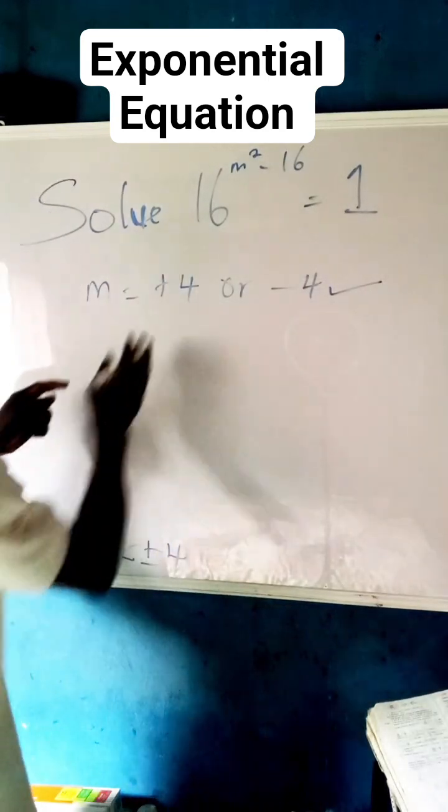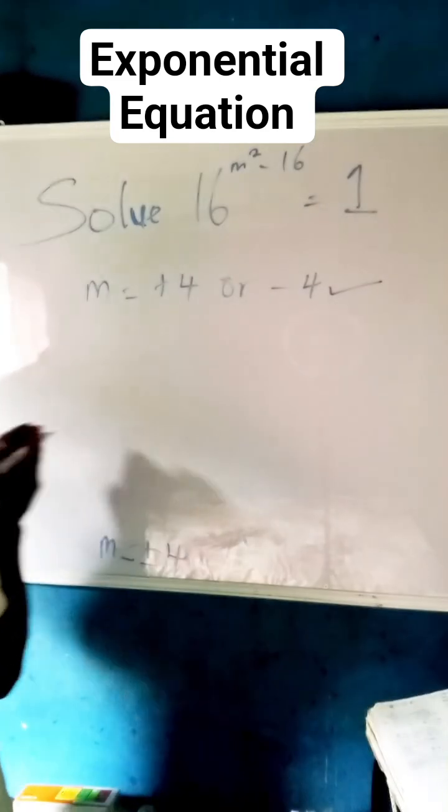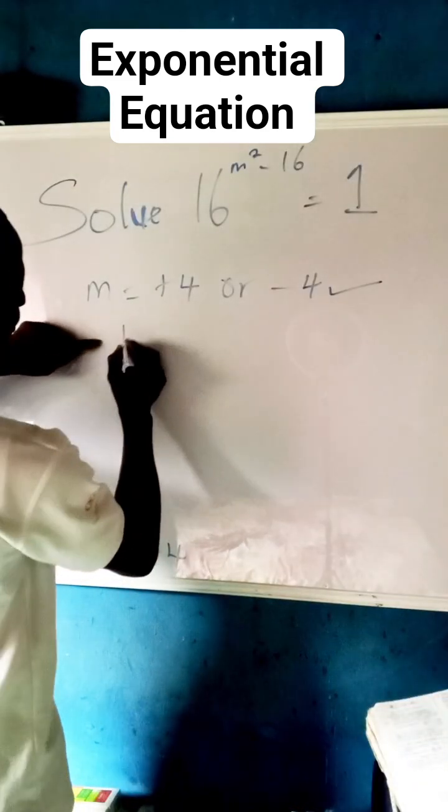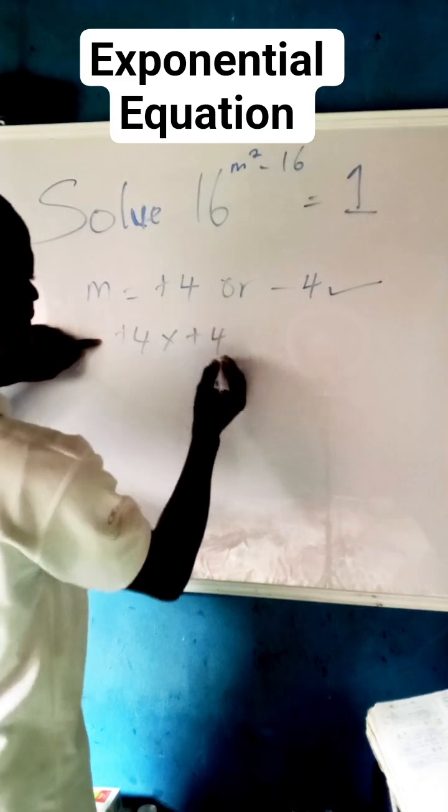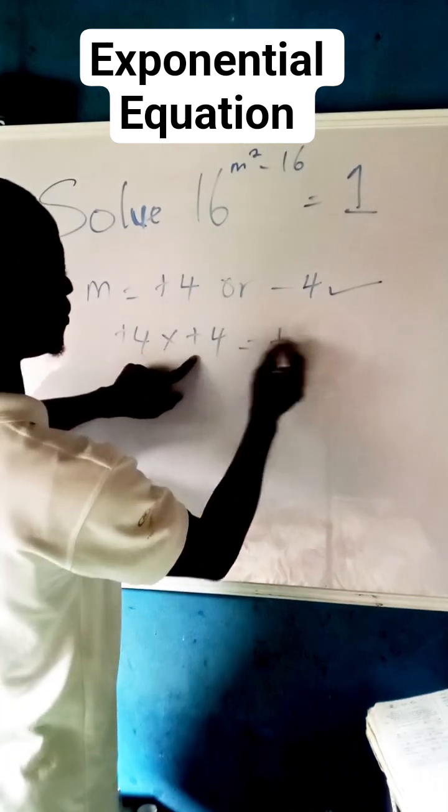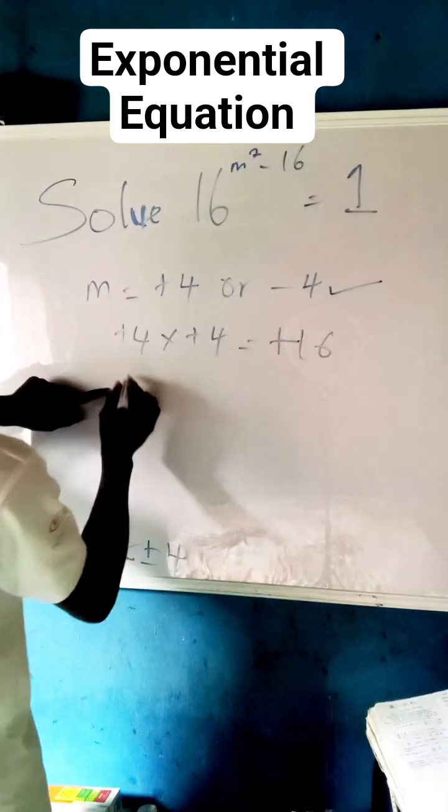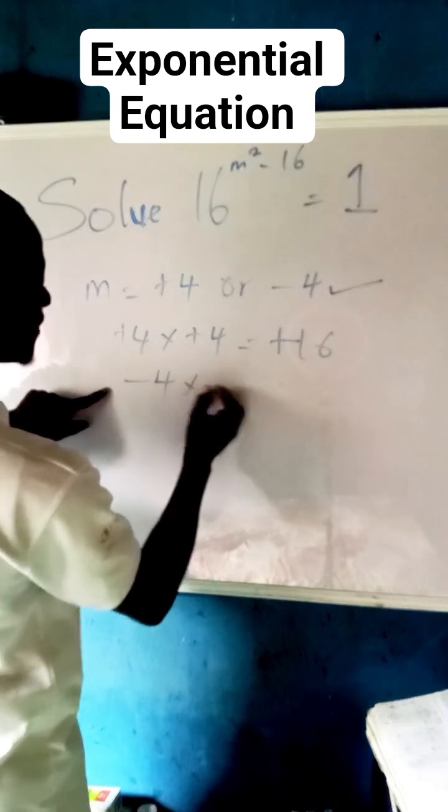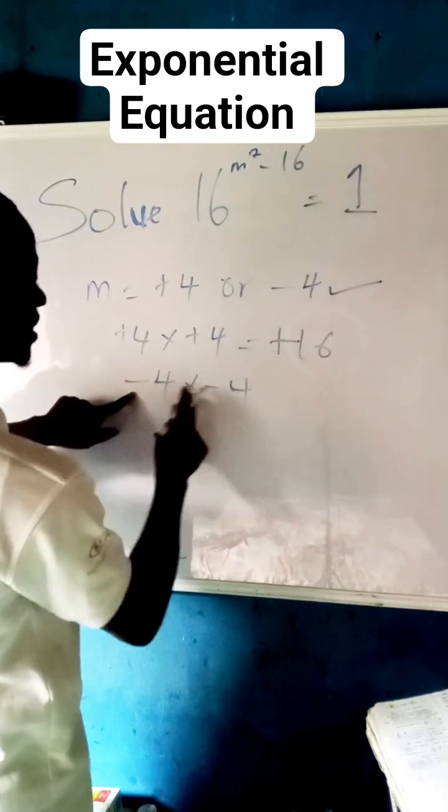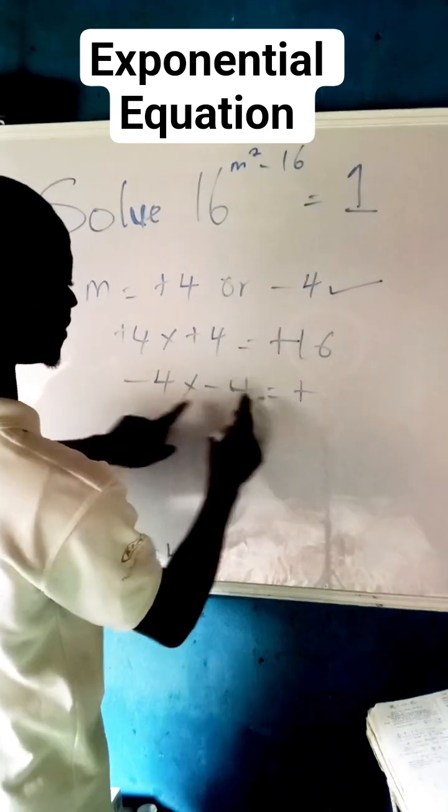This is our final answer. This is why I put plus or minus: because when we have plus 4, plus 4 times plus 4, plus times plus equals plus, 4 times 4 equals 16. Even when we say minus 4 times minus 4, minus times minus equals plus, 4 times 4 equals 16.